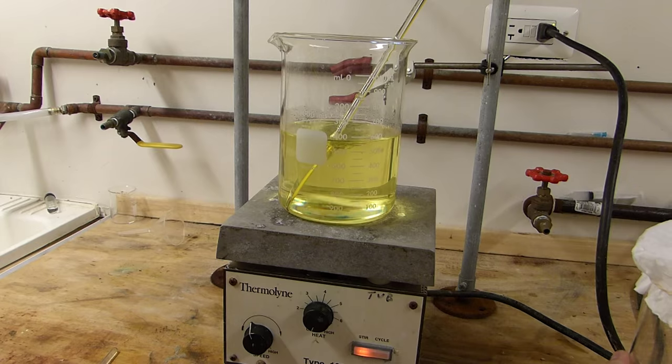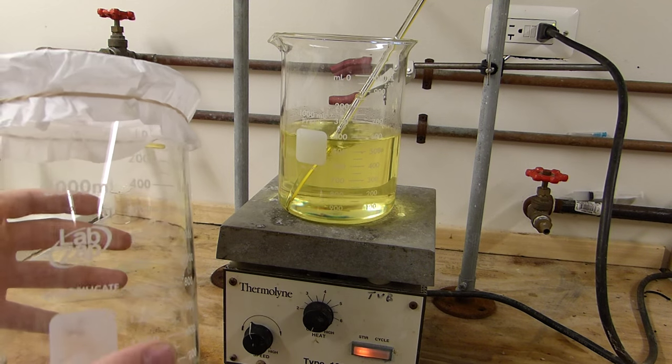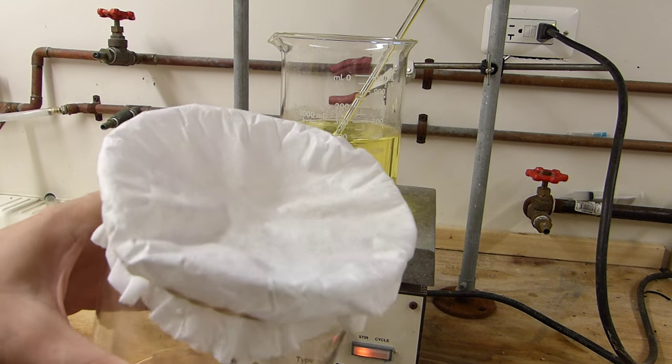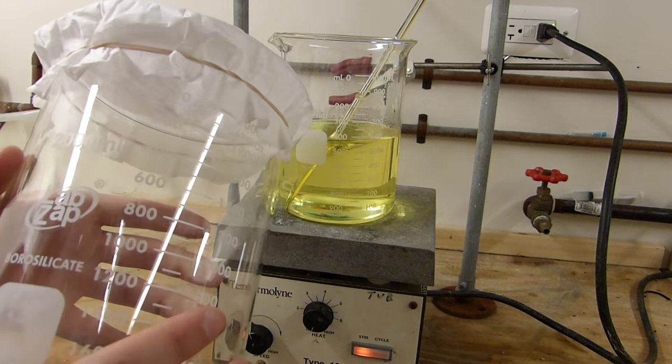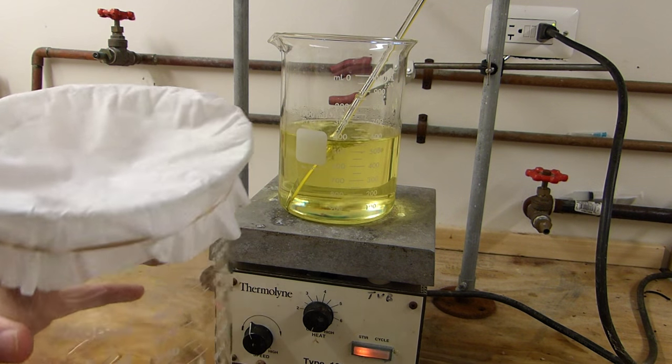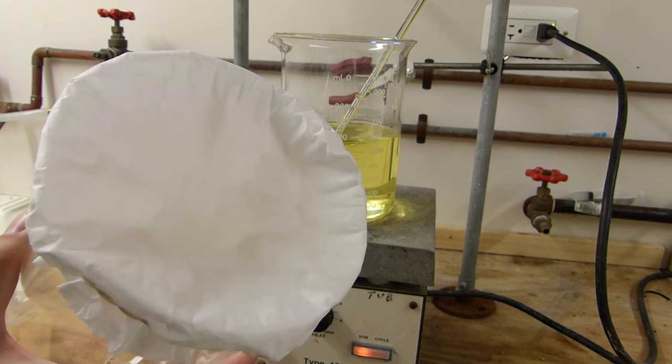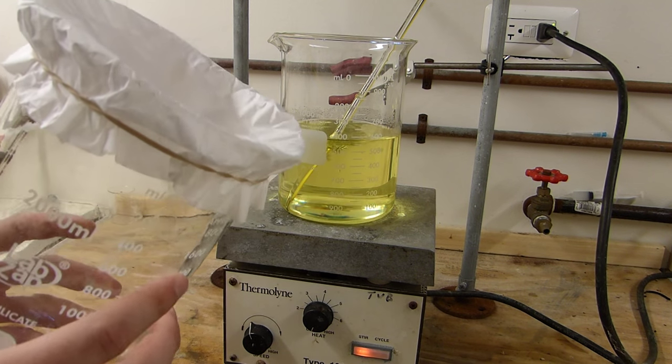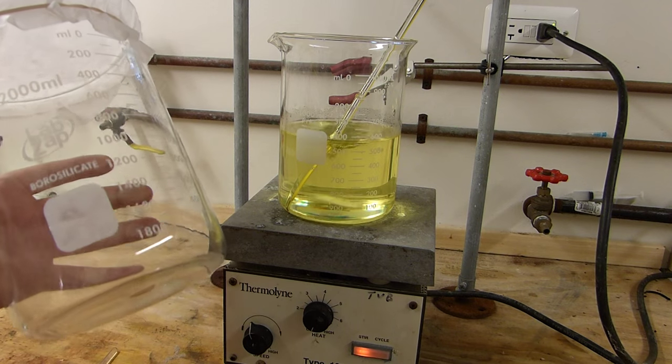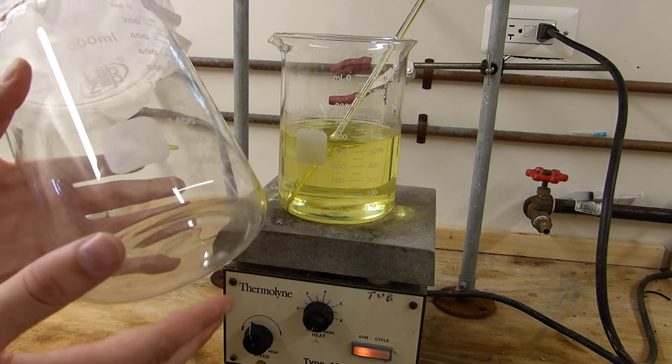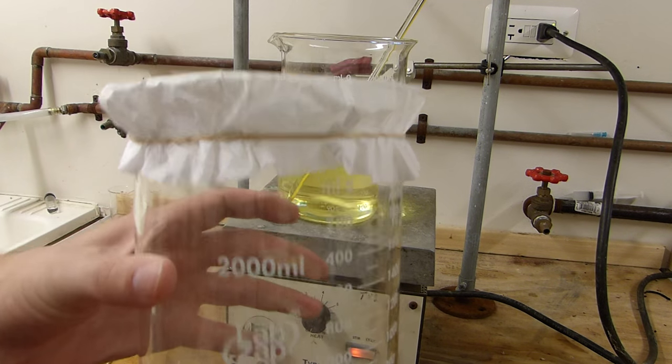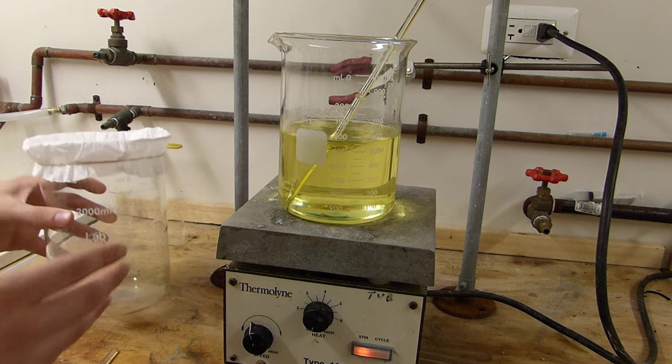But if you do need to filter it, I would suggest using a large beaker like this with a coffee filter over the top. Vacuum filtration is not needed because xylene has a very low viscosity and not a lot of surface tension, so it will go right through this filter without any problems at all. Pre-warm the beaker, of course, because you'll be dumping something that's almost 100°C into a cold beaker, and that's not good for the glass.